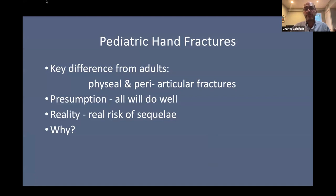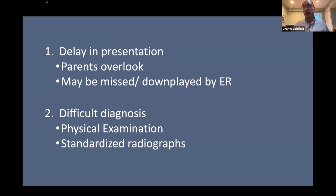Pediatric hand fractures are different from adult fractures because of the physis and the way fractures occur periarticularly. There's a general tendency to assume that because it's a kid, everything's going to be fine — but that's not true for all. I think of four considerations: first, they are often delayed in presentation. Parents may overlook the fracture, the child may not mention it, or it may be overlooked at urgent care or the emergency department.